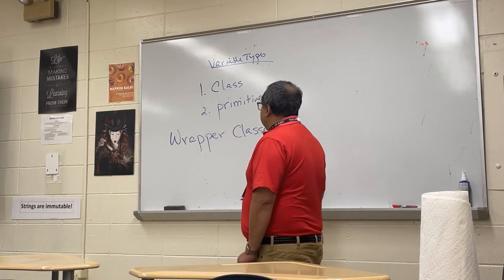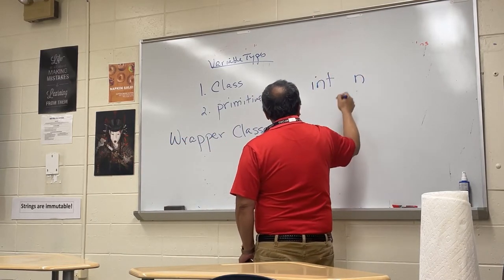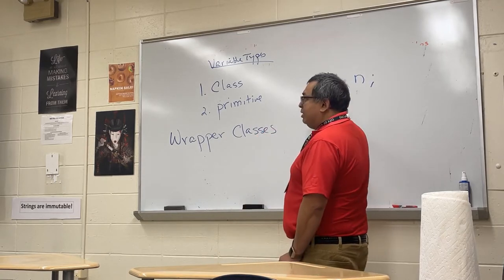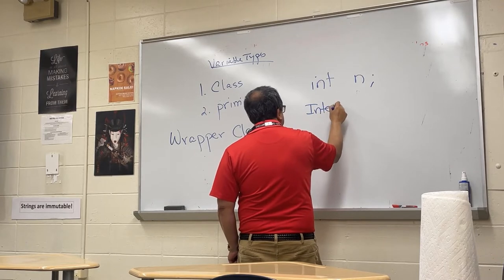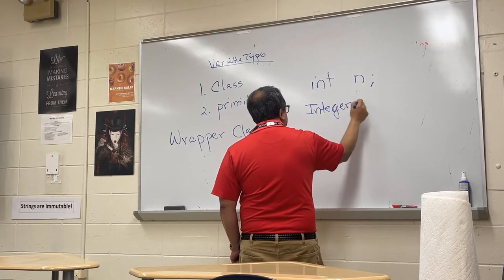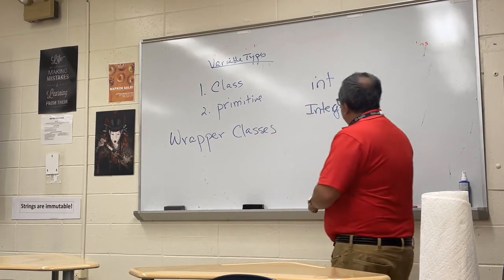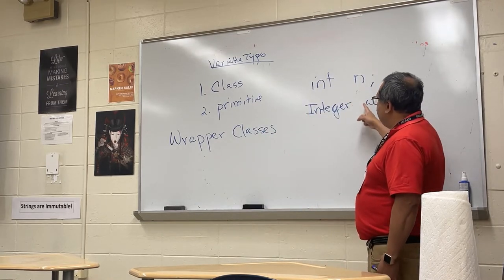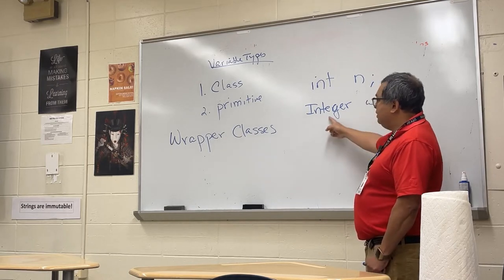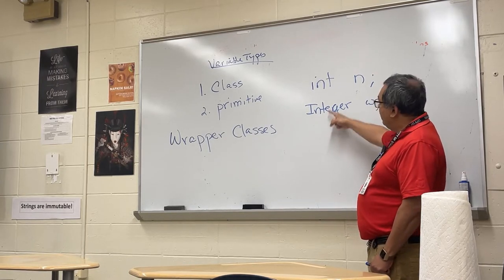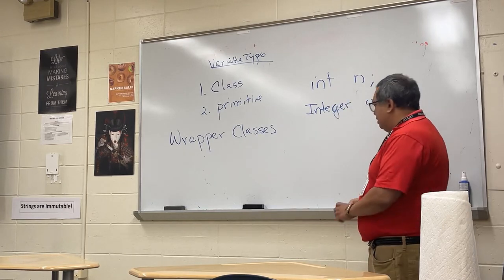For example, if I go int n, that's a primitive. But I can also go Integer w — here n is a primitive, but w is an instance of the class Integer. You might be wondering: if we already have the primitive, why do we need the wrapper class?